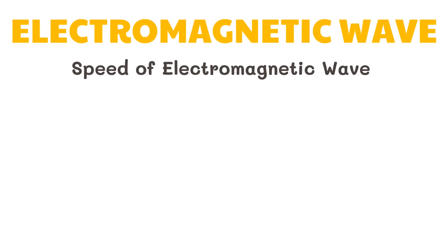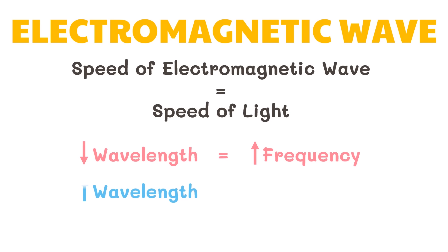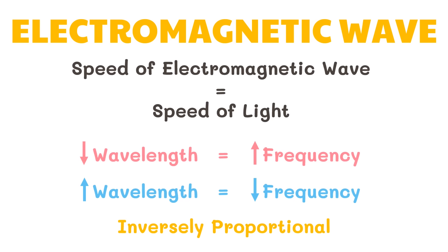Nothing known in the universe travels faster than the speed of light. Since all electromagnetic waves have the same speed — equal to the speed of light — as the wavelength decreases, the frequency of the wave increases, and as the wavelength increases, the frequency decreases. The spectrum of wavelength is exactly opposite to the spectrum of frequency. In other words, wavelength and frequency are inversely proportional to each other.